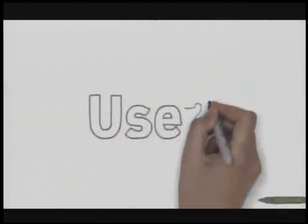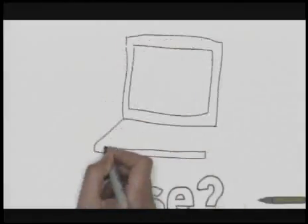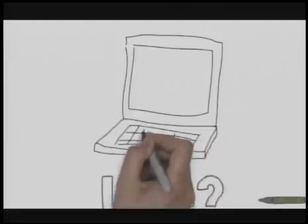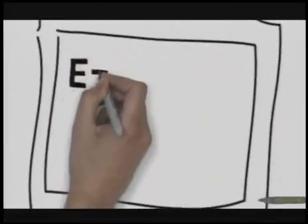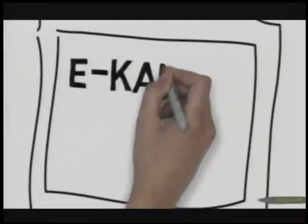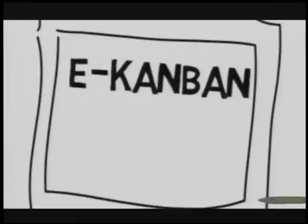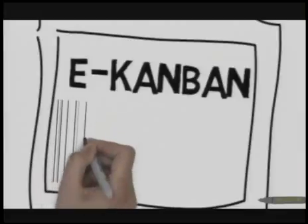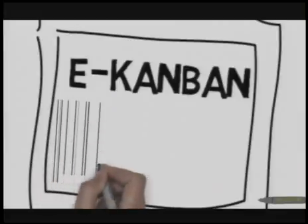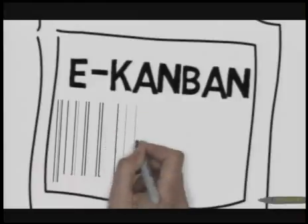Kanban has evolved over the years and has become much more digital. Electronic Kanban, sometimes referred to as eKanban, is a signaling system that uses a mix of technology to trigger the movement of materials within the manufacturing or production facility. Electronic Kanban differs from traditional Kanban in that it uses modern technology to replace traditional elements such as Kanban cards with barcodes and electronic messages.